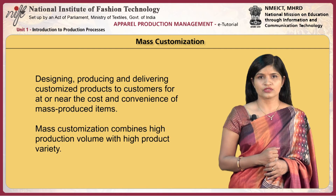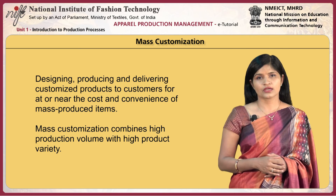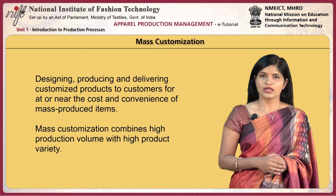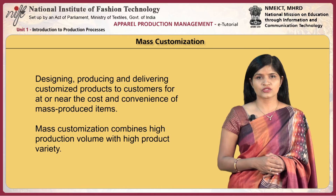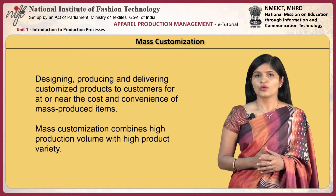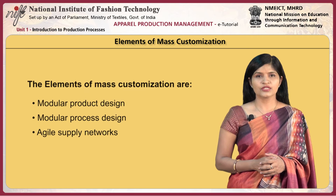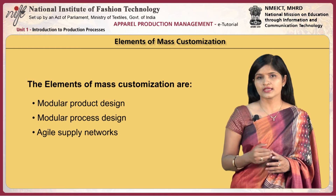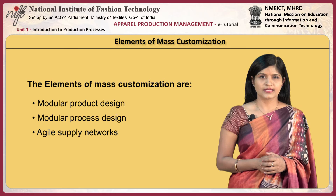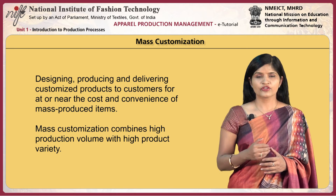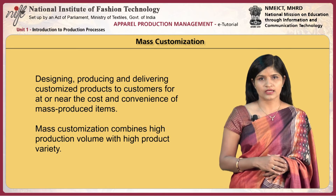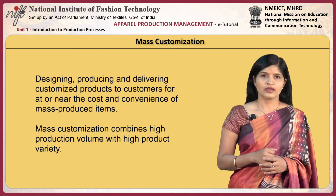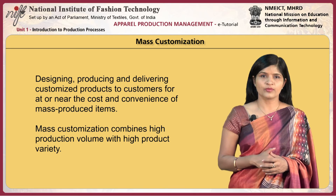Mass customization involves designing, producing, and delivering customized products to the customer at or near the cost and convenience of mass-produced items. It combines high production volume with high product variety. The three elements of mass customization are modular product design, modular process design, and agile supply networks. Mass production serves a large and homogeneous market, while mass customization serves a fragmented and heterogeneous market. Advanced technologies are required to move toward mass customization.